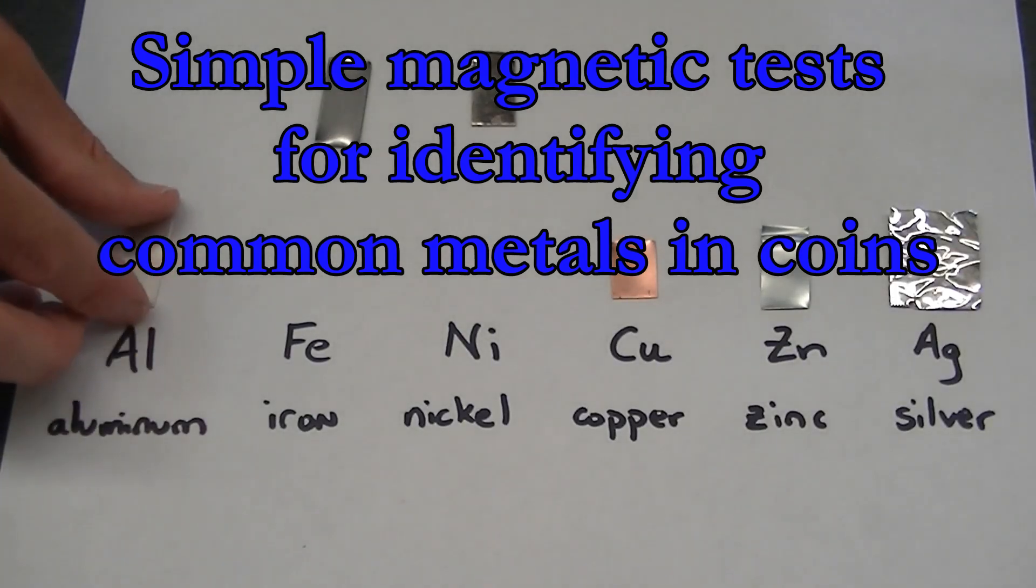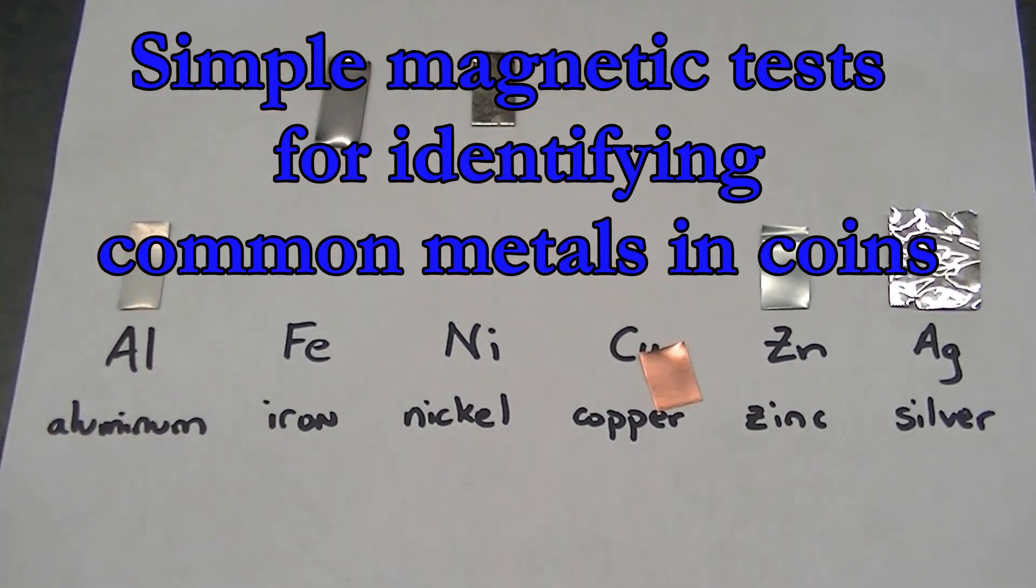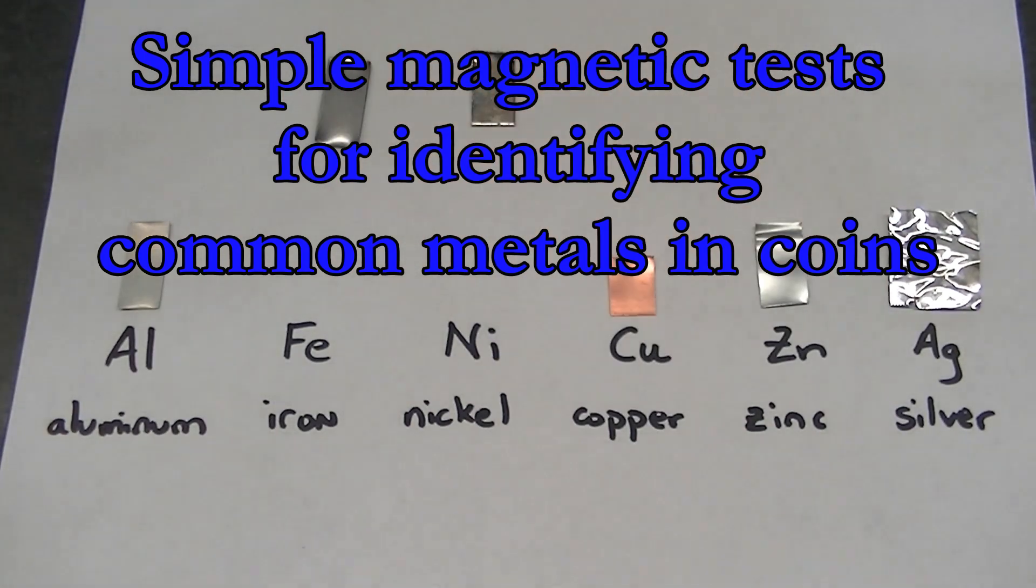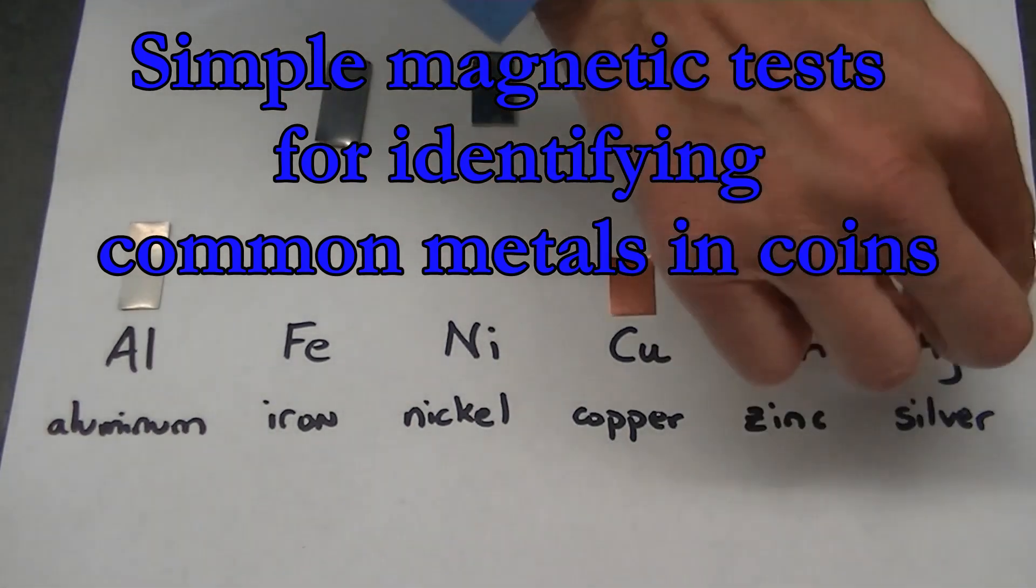Let's do some simple tests on some metals that are commonly found in coins. Aluminum, iron, nickel, copper, zinc, and silver.